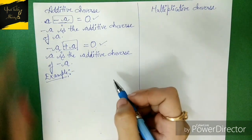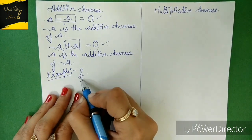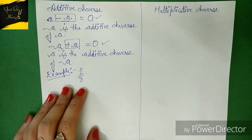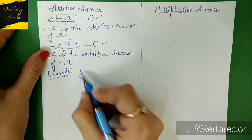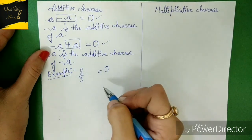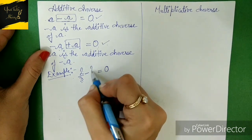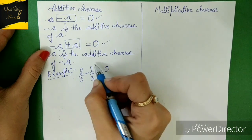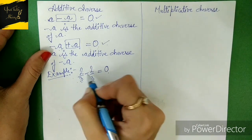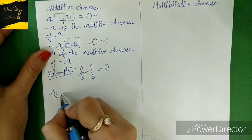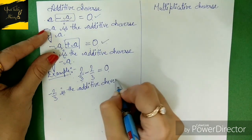Let's move to a practical example. Suppose I'm taking the number 2/3 — this is a rational number. What should be added or subtracted from 2/3 to get a result of zero? Since 2/3 has a plus sign, we need to subtract a similar digit, that is '-2/3'. These cancel each other and we get zero. So minus 2/3 is the additive inverse of 2/3.